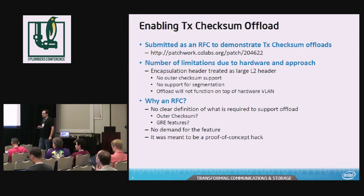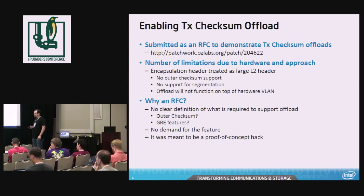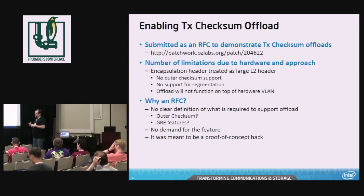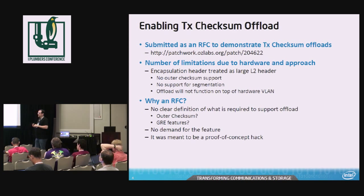For checksum offload, it's essentially a checksum start offset and length. Given that the UDP outer checksum isn't required and can be zero, and given that NVGRE isn't using a checksum and doesn't have optional headers like a sequence number that has to be dealt with — it's all the details of what really needs to be in there.